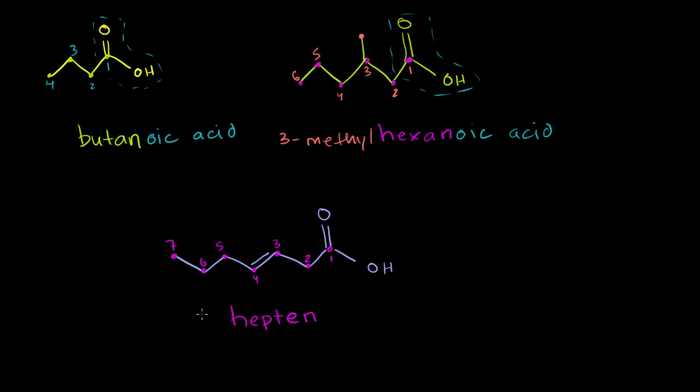So you could either name this 3-hepteen, and I haven't finished it yet. I haven't put this final E over here. Or you could name it hept-3-ene, just like that. This is the more typical one that you would see, because it tells you we have a double bond, and it starts at the number 3 carbon, goes from the 3 to the 4 carbon.